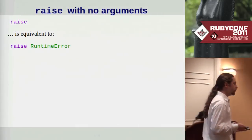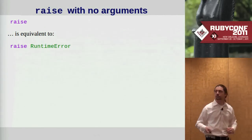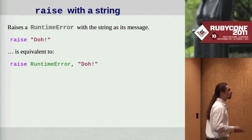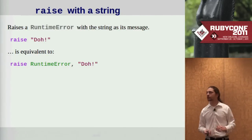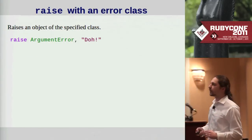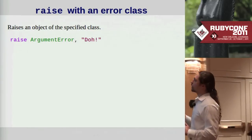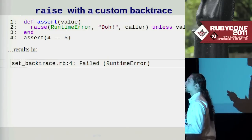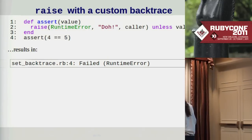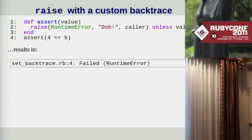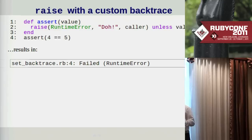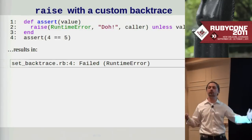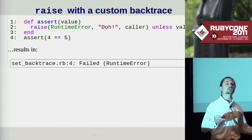Raise with no arguments is equivalent to raising a runtime error. We can raise with a string, which will raise a runtime error with that string as a message. We can raise with an explicit error class. We can also supply another argument to customize the backtrace when we raise an exception. This is useful when writing assertion methods, because we want the stack trace to point back to where the assertion failed, not where the assert method was defined.